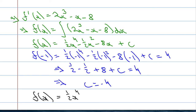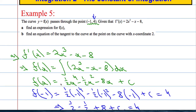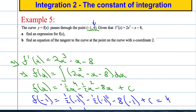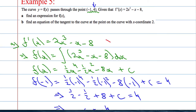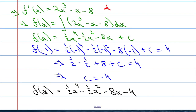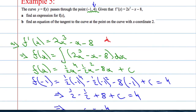So rewriting the function: f(x) = 1/2 · x⁴ − 1/2 · x² − 8x − 4. That's the actual function f(x). For part b: find an equation of the tangent to the curve at the point with x-coordinate 2. We have the gradient function f'(x) = 2x³ − x − 8.